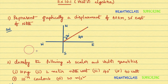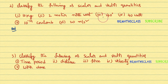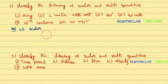Now we will move to the second question. Classify the following as scalar and vector quantities. By seeing them you need to say which one is a scalar quantity and which one is a vector quantity. First bit: 10 kg — it is mass, and mass has only magnitude and no direction. So 10 kg is a scalar.